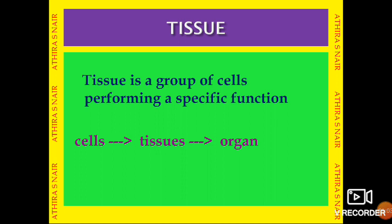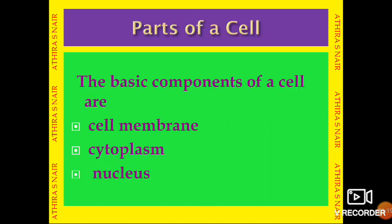For example, when we consider the heart — the heart is an organ. There are cells called cardiac cells or cardiac muscle cells. Those cardiac muscle cells join together to form cardiac tissue, and that cardiac tissue joins together to form the organ called the heart.